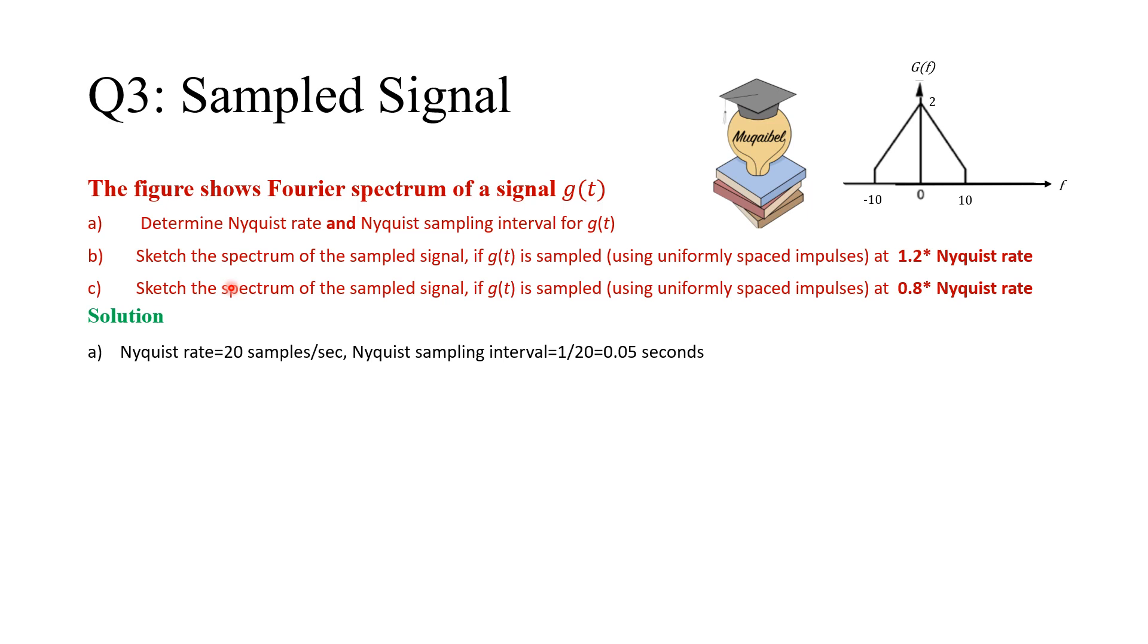Sketch the spectrum of the sampled signal if G of T is sampled using uniformly spaced impulses at 1.2 times Nyquist rate. Sketch the spectrum of the sampled signal here. You can pause the video now if you need more time. Now, I'll show the answer. Answer to part number B.